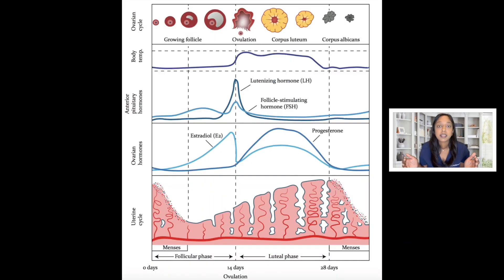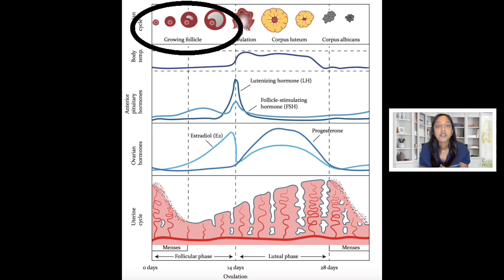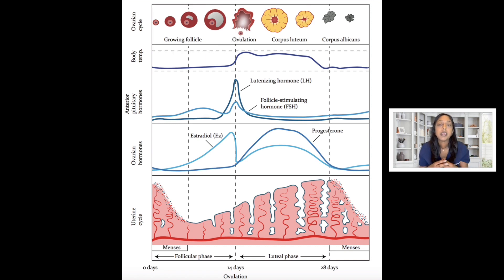At the beginning of a cycle, the period will occur and that is considered cycle day one and the start of the cycle. The brain produces FSH, which stands for follicle stimulating hormone, that will travel through the bloodstream to the ovary and stimulates the ovary to grow a follicle. Within the follicle is a microscopic egg. As the follicle is growing, the egg is maturing. The follicle is also producing estrogen.